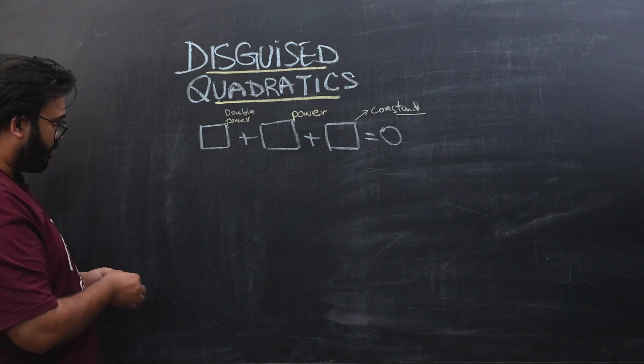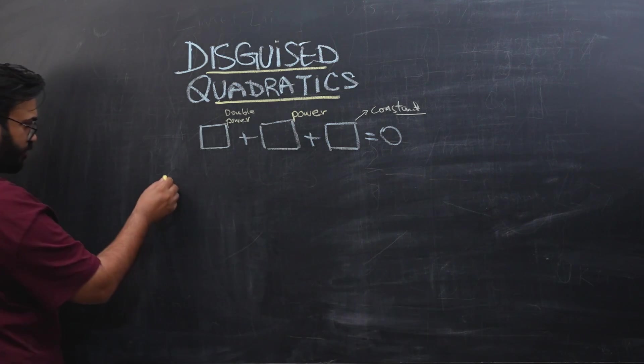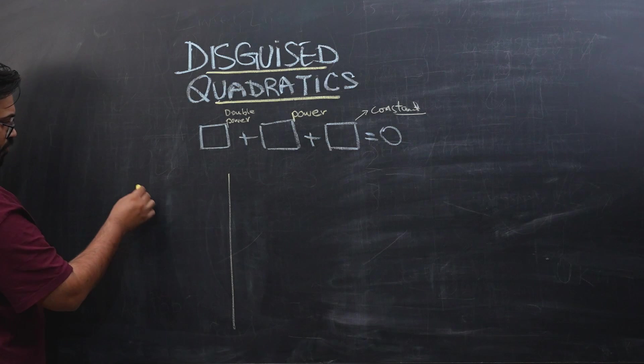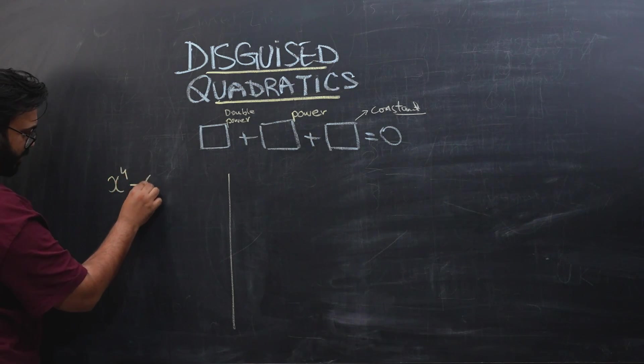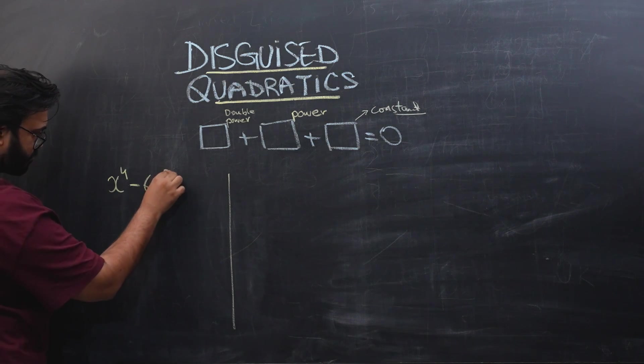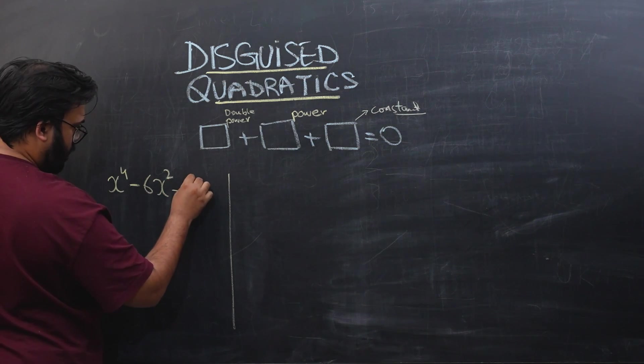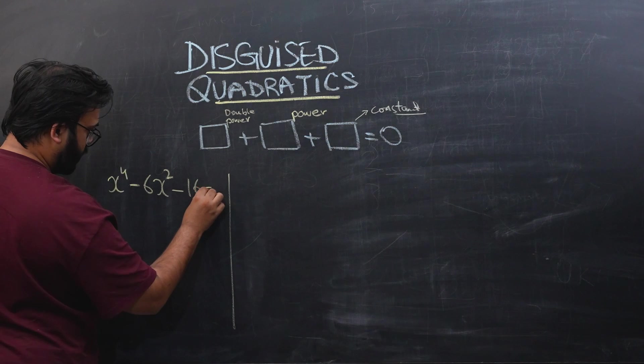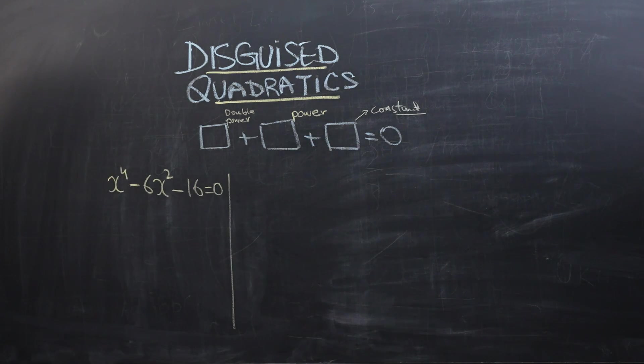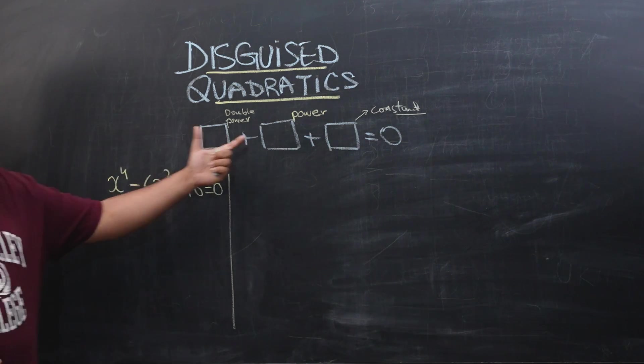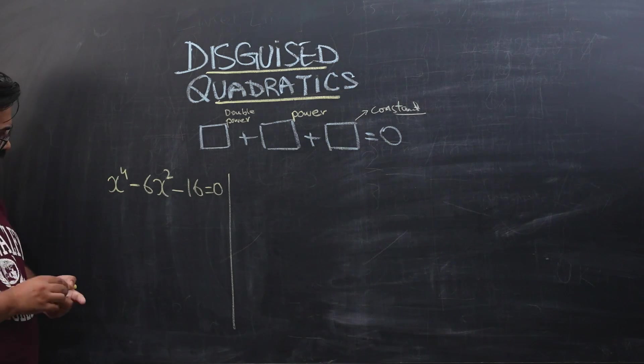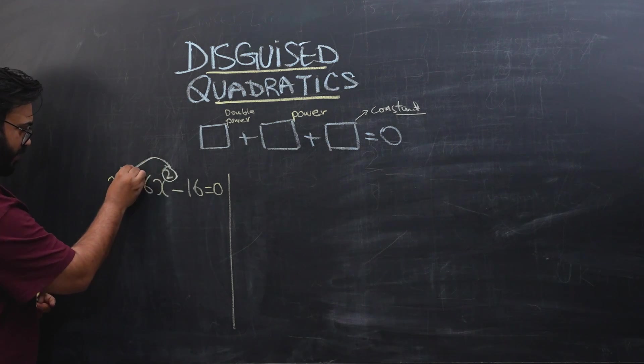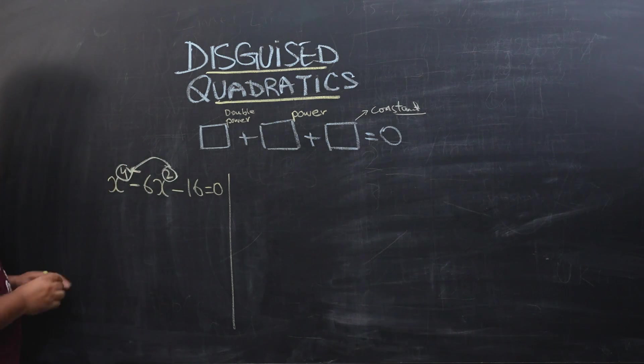Let's see. Let's have an example. The obvious example that I always use. First of all, if I have x to the power 4 minus 6x squared minus 16 equals zero. Now you guys can see that this is following this pattern. This is a three-term equation. We have a constant over here. We have some power, which is 2, and double of that power is present over here. We can see that this is going to be a disguised quadratic.